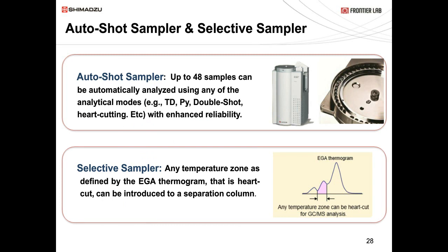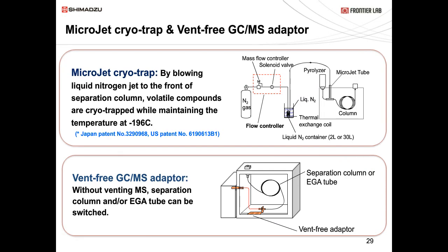The auto shot sampler has 48 spots for your sample and enhances efficiency in your laboratory. The selective sampler allows you to thermally slice your EGA and selectively pick any temperature zone. The micro-jet cryo-trap is connected to the head of the GC column inside the GC oven, using a liquid nitrogen thermal exchange coil, trapping and focusing all volatiles and lighter components—with a lowest temperature of around -196°C. The vent-free adapter at the bottom allows you to switch columns or EGA tube to separation column very quickly in a few minutes.